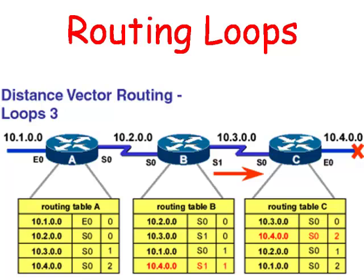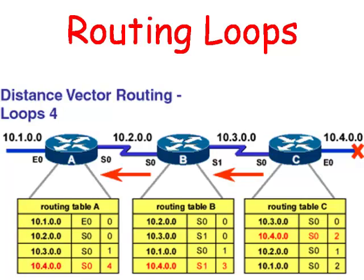Router C will put in its routing table that Router B has a connection to the 10.4 network and it will say that it is two hops away. Router B will then change its tables to say that C has a connection to the 10.4 network which is three hops away. Router B will then advertise to Router A that the connection to the 10.4 network is four hops away. Thus, if somebody from the 10.1 network was to ping the 10.4 network, the ping packet will travel from Router A to Router B to Router C, which will then bring it back to B and then back to C, and the connection between B and C will form a routing loop.